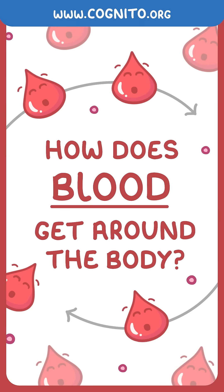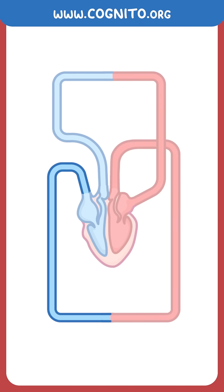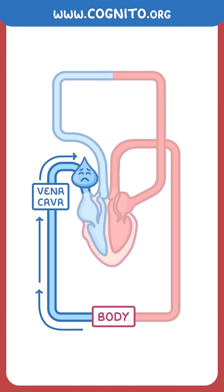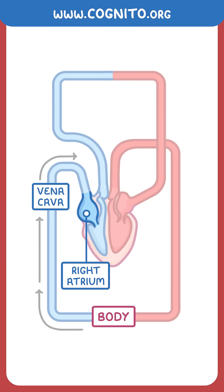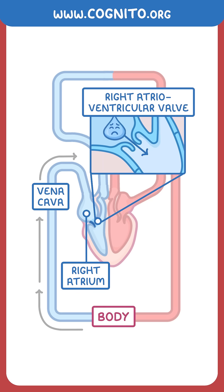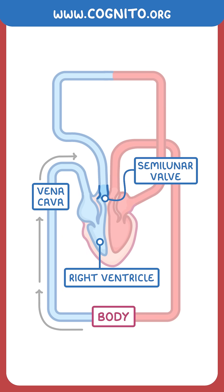How does blood get around the body? Let's start with blood coming back from the body, which goes through the vena cava to enter the right atrium of the heart. When the right atrium contracts, it pumps blood through the right atrioventricular valve into the right ventricle, which in turn contracts to pump blood through